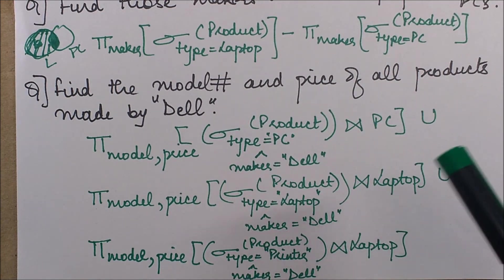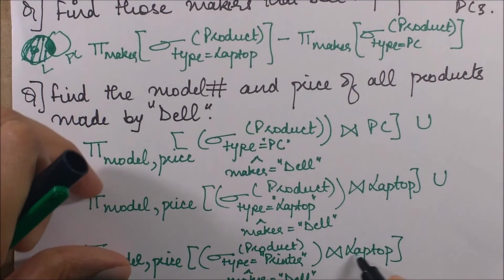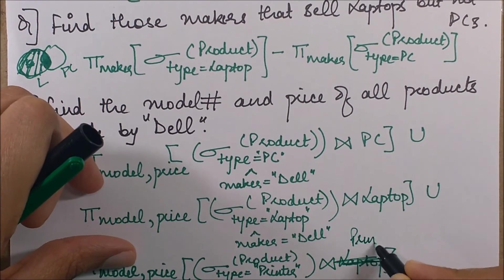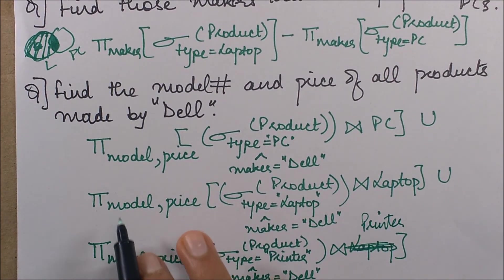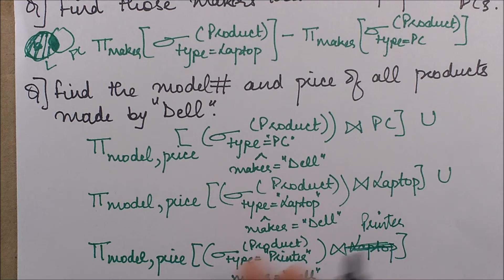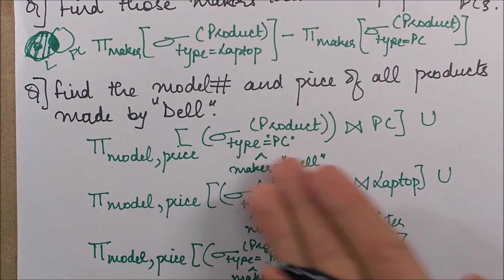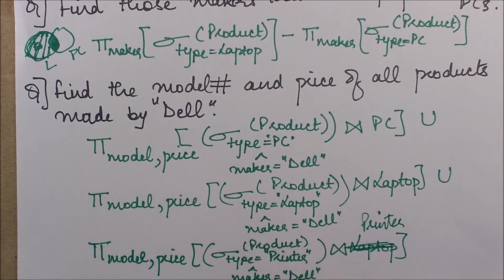That means essentially we require to join our product table with the PCs, laptops, and printers individually. And then we have to project the model and price from them.